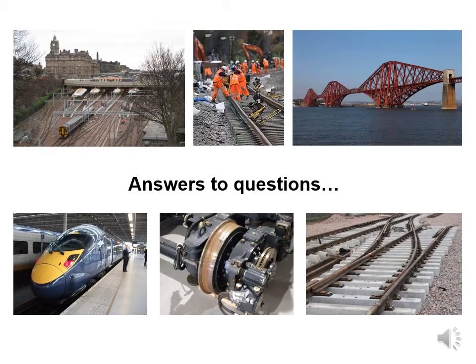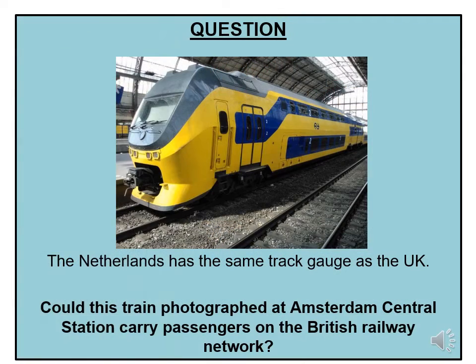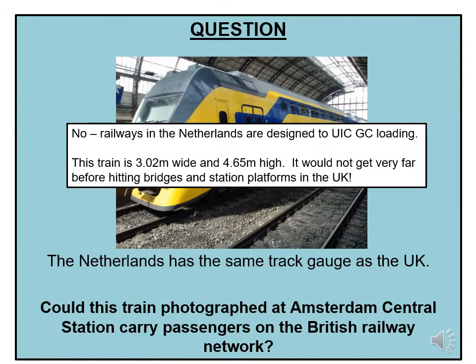Now I'm going to provide answers to the questions I posed previously. If you've ever been to the Netherlands, you'll remember that the trains have two decks. Railways in the Netherlands are designed to a different loading gauge — UIC GC. So in response to my question, the answer is no. This train is 3.02 metres wide and 4.65 metres high, and it would not get very far before it hit a bridge or struck a platform edge in the UK, which would result in a catastrophic accident.